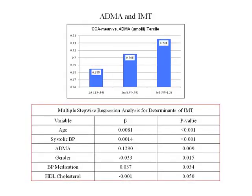You can do an analysis looking for independent determinants of increased IMT: advancing age, high blood pressure, male gender, blood pressure medications, and ADMA are important predictors of an increased IMT. That makes sense because ADMA is a reflection of the sum total deleterious effects of all your risk factors. The higher your ADMA, the worse your endothelial function, the greater will be your IMT.